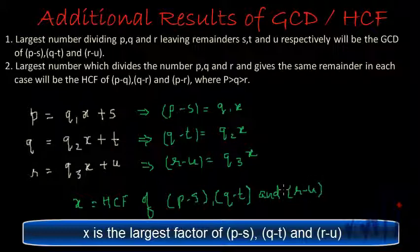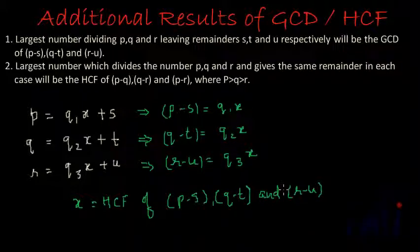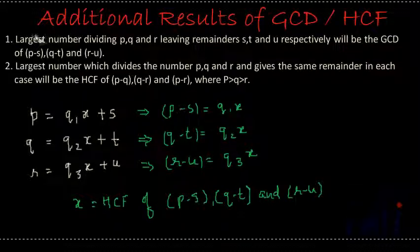This is the proof behind that first result, and we use this result in many places while solving problems. The first result of HCF says: the largest number dividing P, Q, and R leaving remainders S, T, and U respectively is actually the GCD of P minus S, Q minus T, and R minus U. Now let's concentrate on the second result.